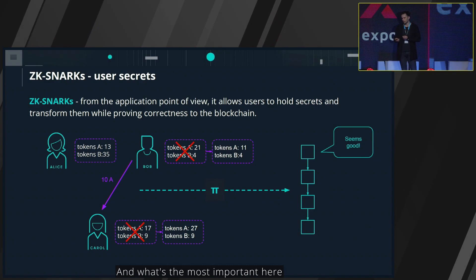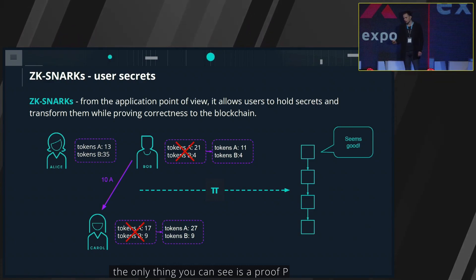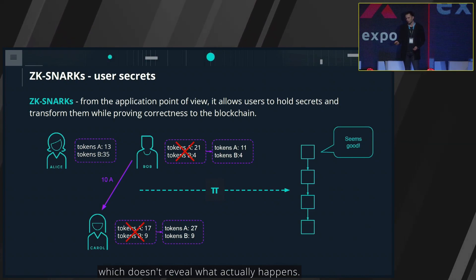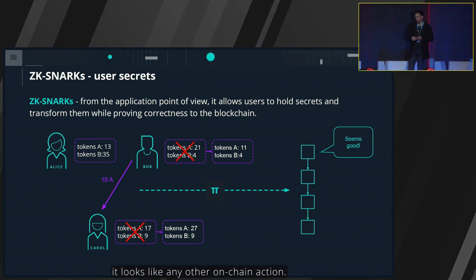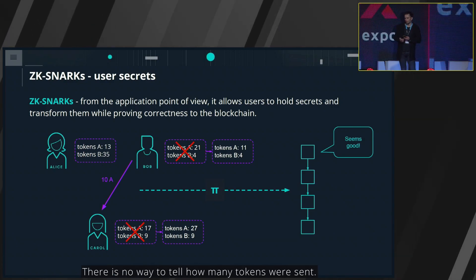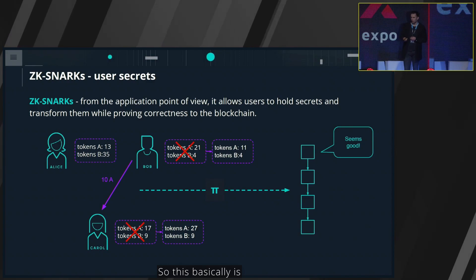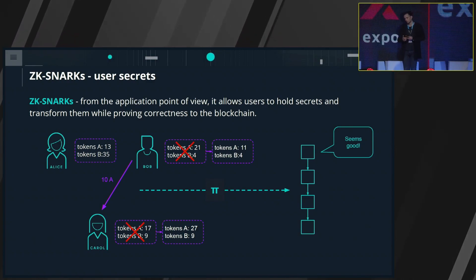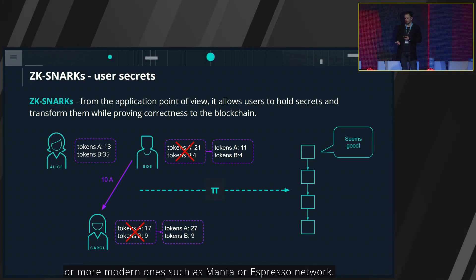No one is minting any new tokens. What happens is only a legal transfer of tokens from Bob to Carol. Most importantly, when you observe the chain, the only thing you can see is a proof P which doesn't reveal what actually happened. For any outside observer, it looks like any other on-chain action — there is no way to tell how many tokens were sent or that Bob and Alice were involved. This forms the basis for protocols such as Zcash, Manta, or Espresso network.